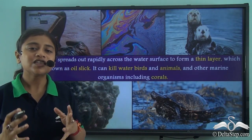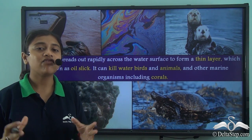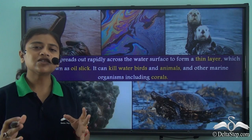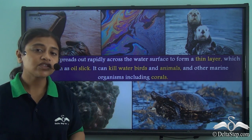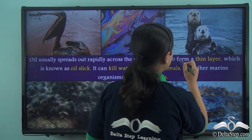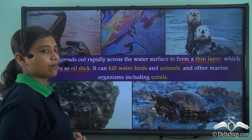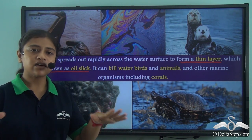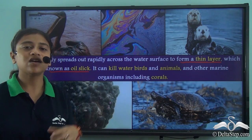When an oil spill takes place, there is a release of large quantities of oil into the water body. This oil spreads rapidly on the surface of the water and it forms a thin layer which is known as the oil slick. So the oil that spreads on the surface of the water forms a thin layer known as the oil slick.